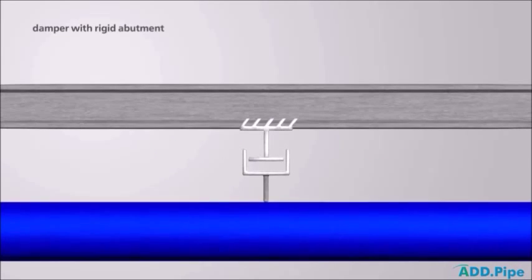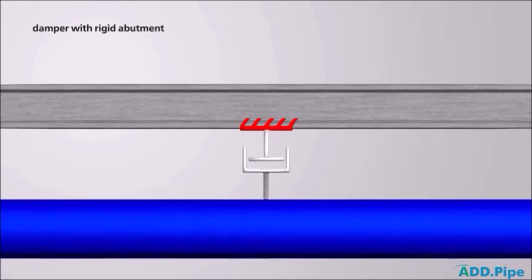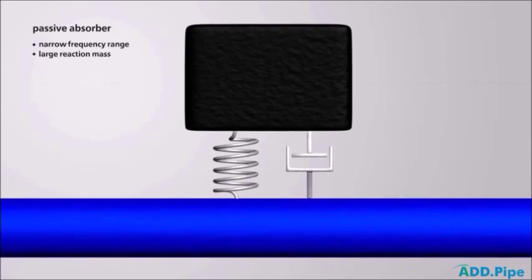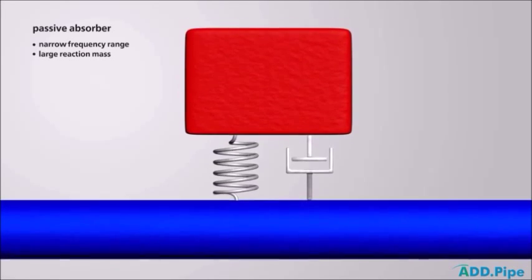Dampers require a rigid fixed abutment which, due to the resonant supporting structure, in most cases is not available. Passive absorbers only act in a narrow frequency range. In addition, they must have a large reaction mass.